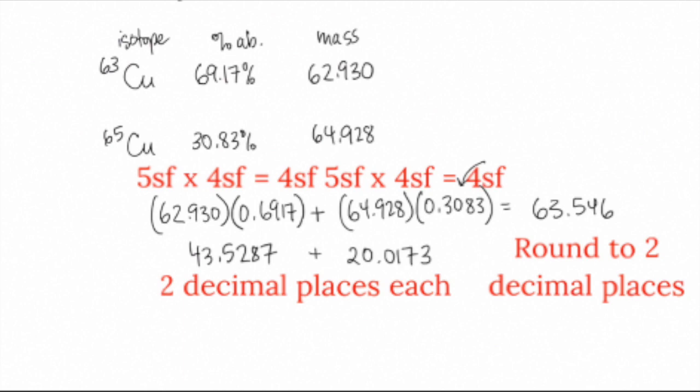I should only have four sig figs in my answer. I want to pause here for a minute and talk about sig figs. You'll notice in this top line of the calculation, I have 62.930, which has five sig figs, times 0.6917, which has four sig figs, so when I multiply those together, the answer will have four sig figs. The same is true for the other calculation with 64.928 with five sig figs and 0.3083 that has four sig figs. Now when I wrote them down below, I kept more decimal places, and that's because you never round off until you're at the final piece of the calculation. So I wrote 43.5287, but I know that number should have four sig figs, or in other words, it would be rounded off at the hundredths place, the second decimal place. The same is true for 20.0173.